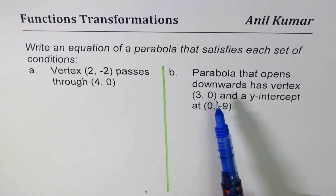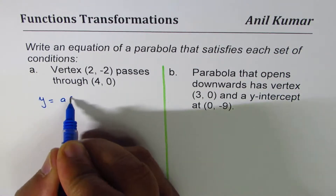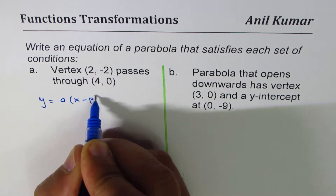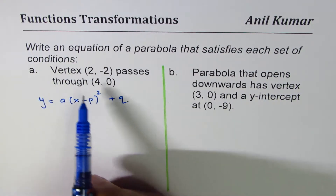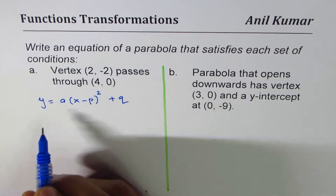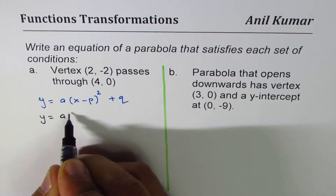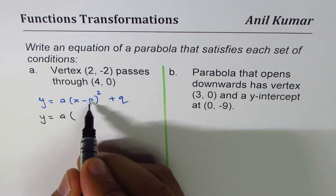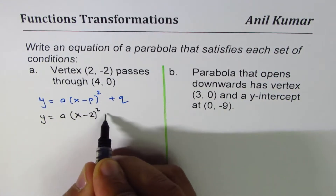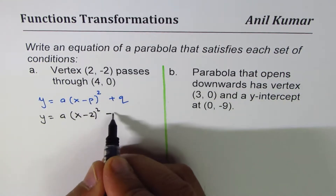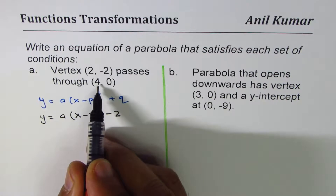Both are given along with the vertex, so we should write the equation in the form y = a(x - p)² + q. Now in this equation, the vertex is (2, -2), so that makes it y = a(x - 2)² - 2, where p is 2 and q is -2.